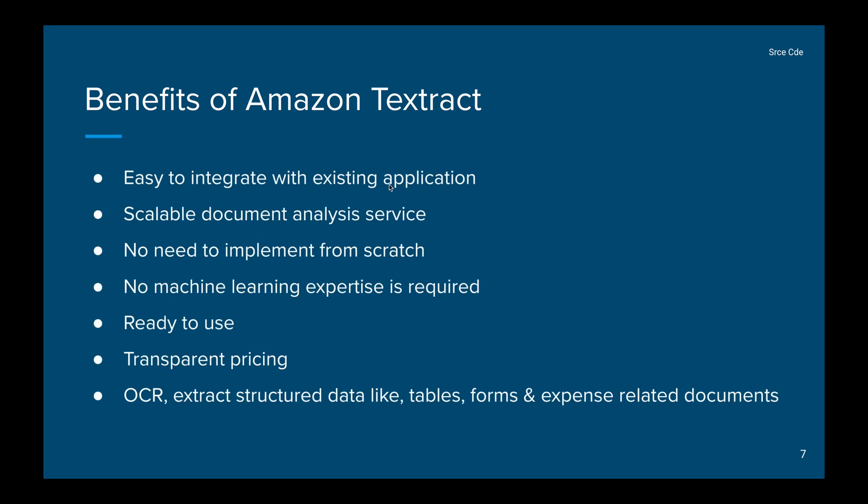The benefits of using Amazon Textract include easy integration with existing applications — you can create a small module using AWS services, expose it via API endpoints, and call it from your existing application. It is scalable, so you don't need to worry about scaling. There is no need to implement anything from scratch, and no machine learning expertise is required. Pricing is transparent, and it supports OCR, structured data extraction like tables and forms, key-value pairs, and expense document processing.